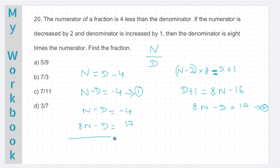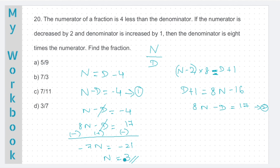To eliminate D, I have to subtract the first equation from the second equation. I am changing the signs for all three terms in the first equation. N minus 8N will be minus 7N. Minus D and plus D gets cancelled. Minus 4 minus 17 is minus 21. So N is minus 21 by minus 7, which is 3. If N is 3, D will be 3 plus 4, which is 7. So the fraction is N by D, which is 3 by 7. Option D is the correct answer.